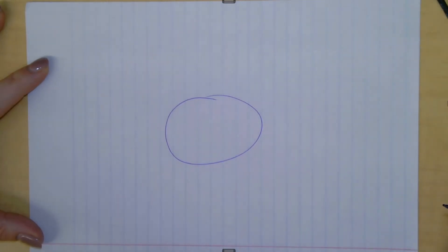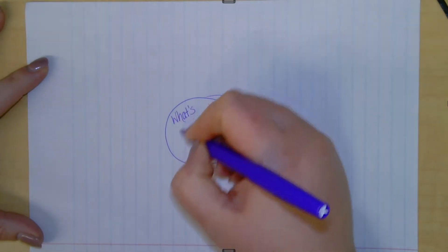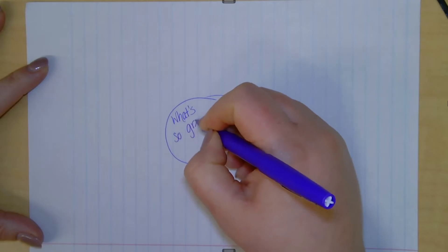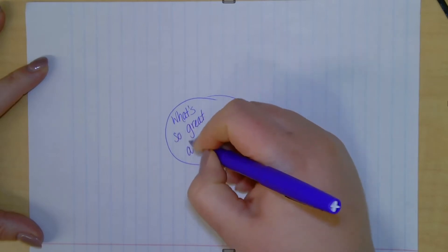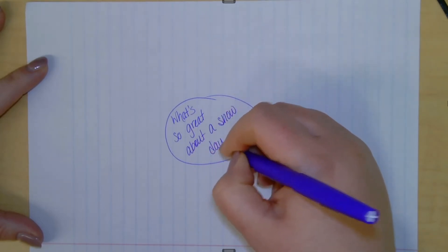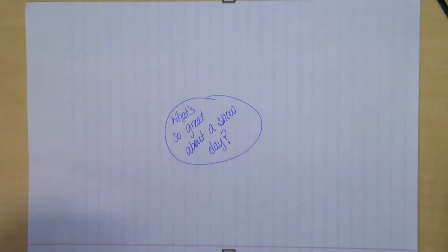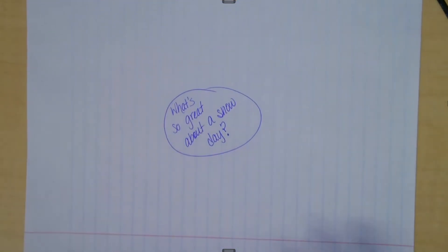Today is day one of our writing process, so I'm going to draw a web. So in the middle, I'm going to write, what's so great about a snow day? Now, if you don't like snow days, you could change this to what's not so great about a snow day. Maybe you don't particularly care for snow days. You decide what you want to write about. So our topic is snow days.